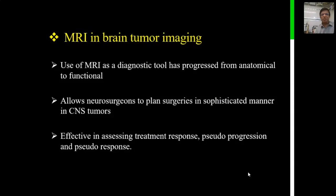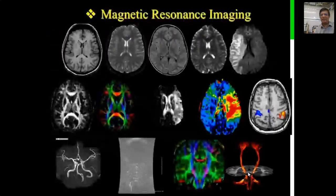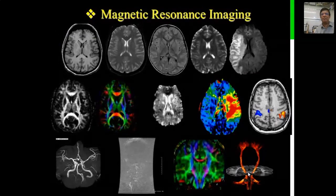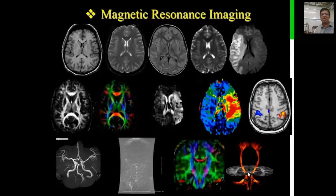Use of MRI as a diagnostic tool has progressed from anatomical imaging to functional imaging. This allows neurosurgeons to plan surgeries in a very sophisticated manner. It is effective in assessing treatment response when giving chemo or radiotherapy post-surgery. It differentiates true progression from pseudo-progression and true response from pseudo-response, allowing oncologists, radiation oncologists, and surgeons to understand tumor behavior much better. It also allows better detection and assessment of what is going to happen to the patient.